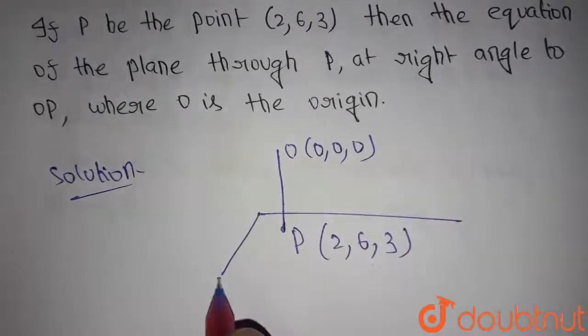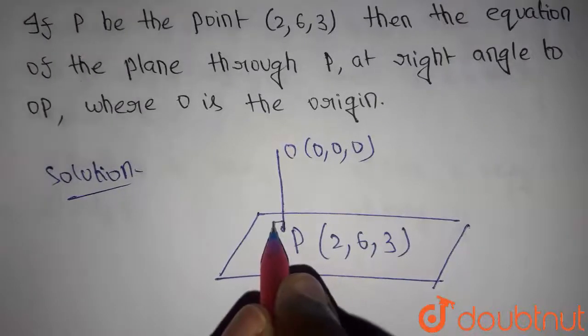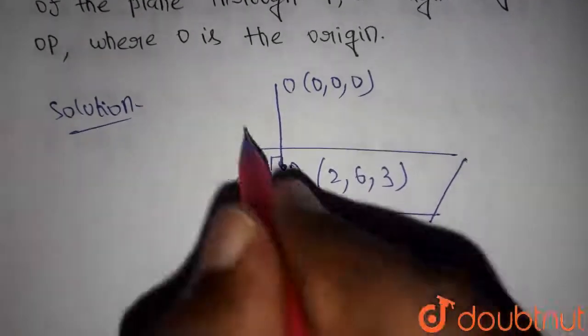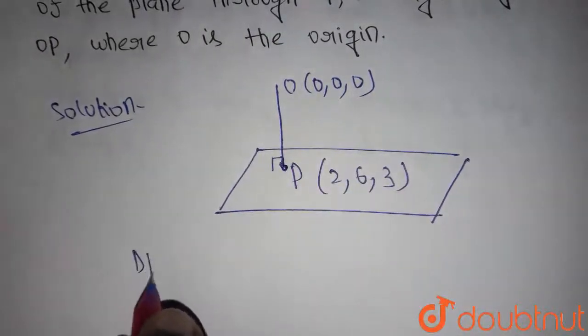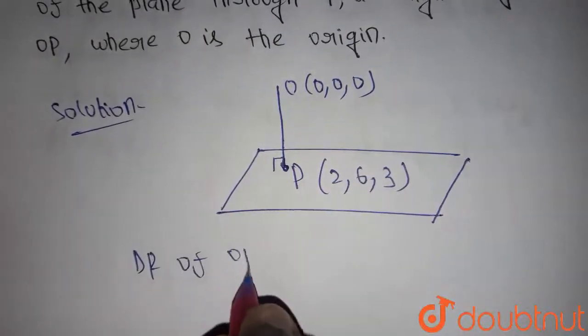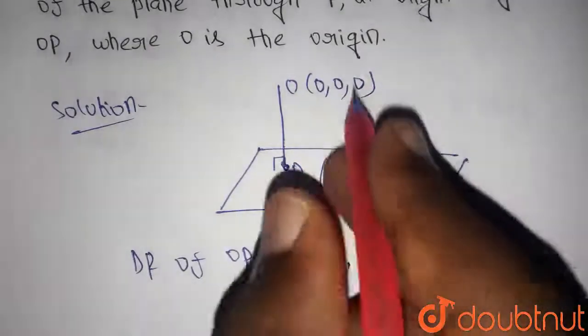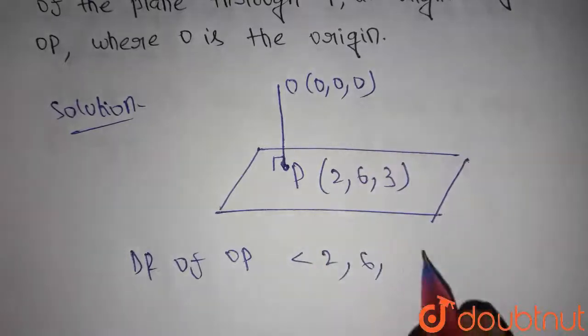Now we have to find a plane equation which is perpendicular to OP and passing through point P. Now let's find out the direction ratios of OP. Direction ratios of OP is given by 2 minus 0 which is 2, 6 minus 0 which is 6, 3 minus 0 which is 3.